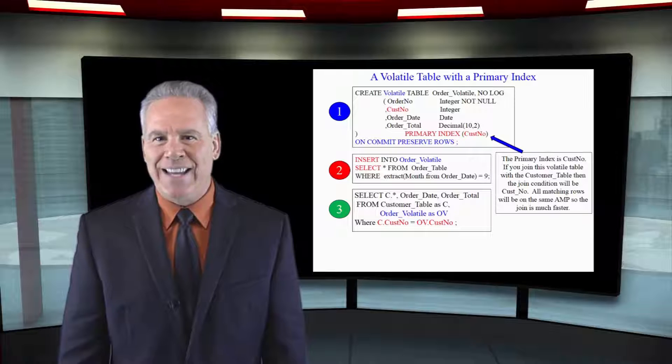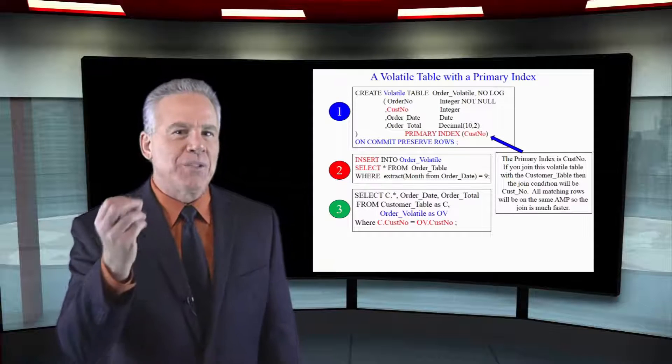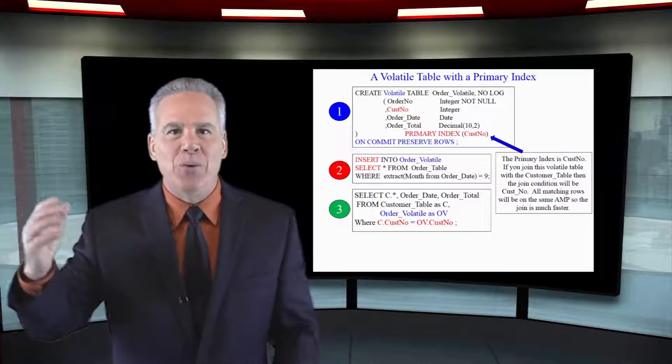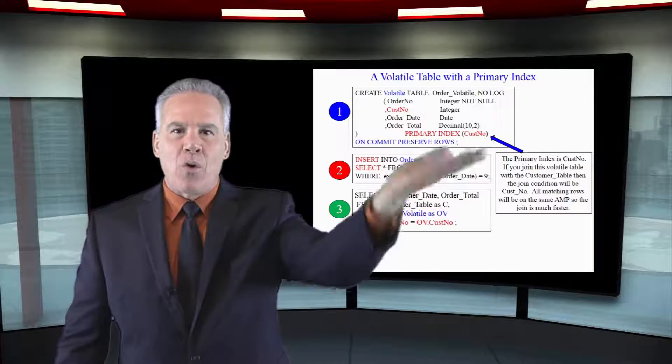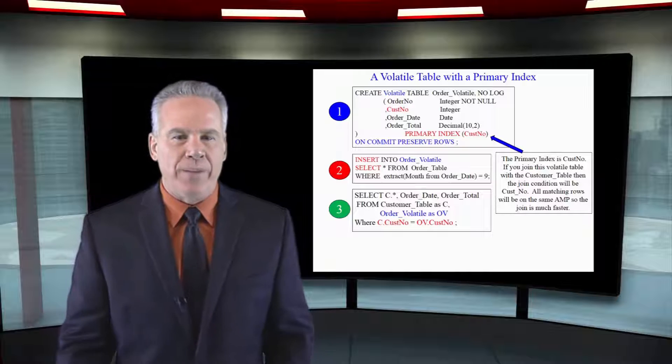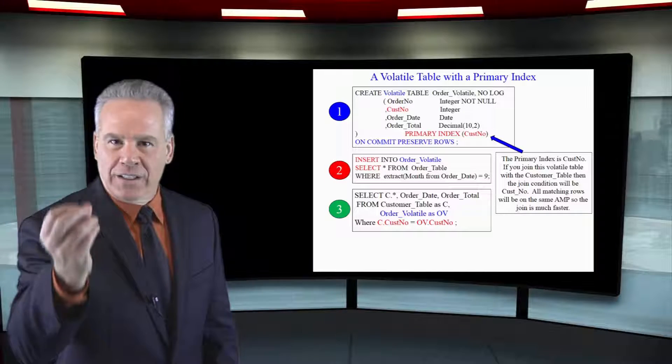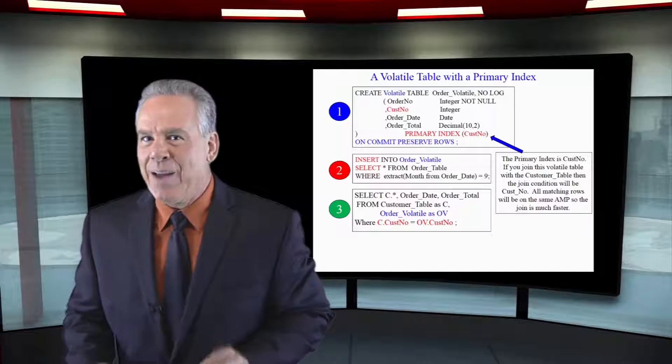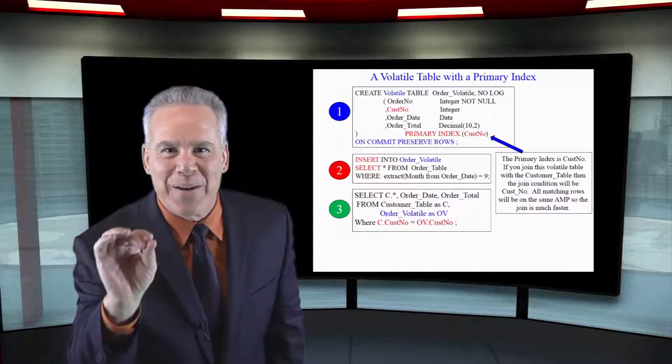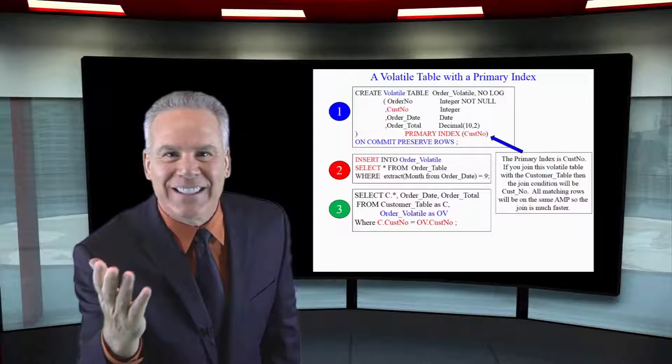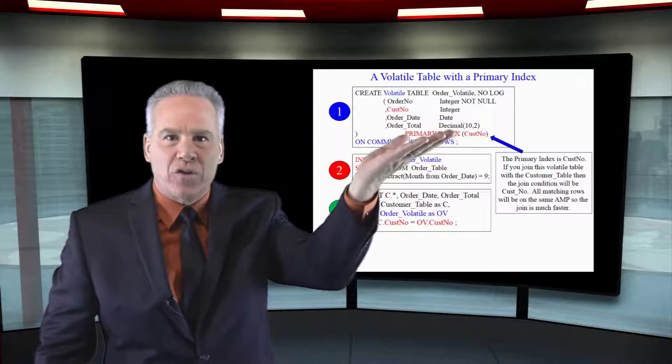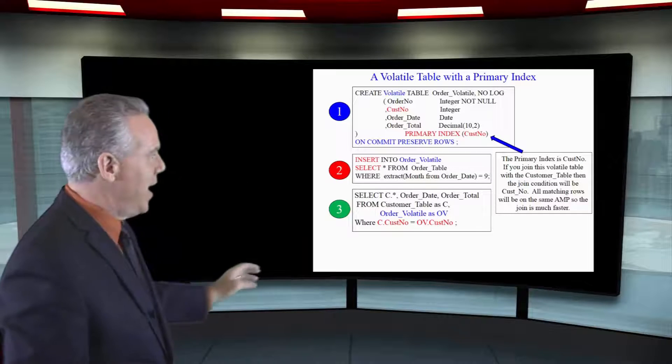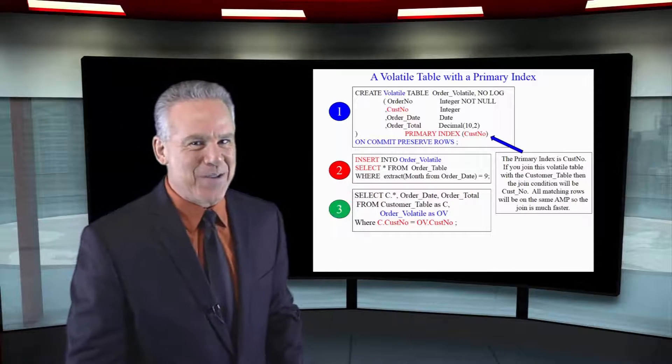Now I've got a great technique for you. Sometimes you're creating a volatile table that you're going to join to another table. Keeping with our order table customer table theory, we're going to create a volatile table on the order table and give it a primary index. Yes, you can give the volatile table a primary index too. Don't let it default to the first column. Give it a primary index, and I gave it customer number.